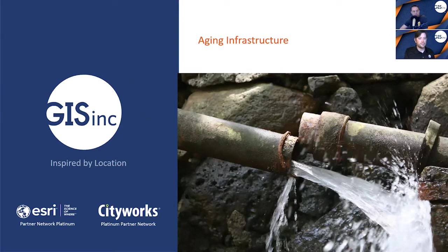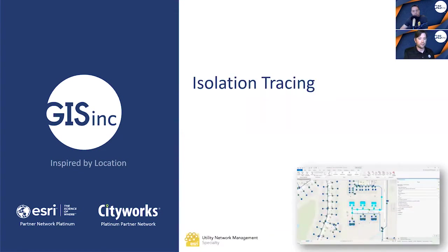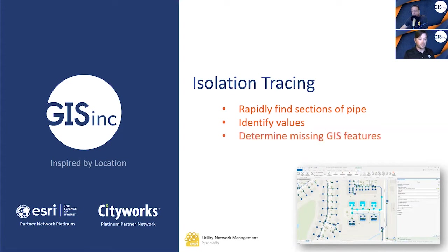Sure, Steve. This capability gives users of the water system the ability to rapidly find and isolate sections of the network that might be affected by a leak, and determine what valves are needed to turn off the water flow. This process also allows the GIS team to validate the existence of critical features that might be missing from the GIS that are needed to run the isolation trace. This is a preemptive measure that allows GIS staff to determine if features may possibly be missing.